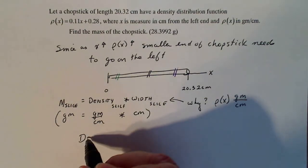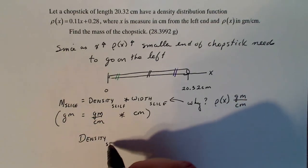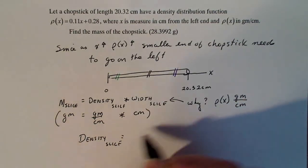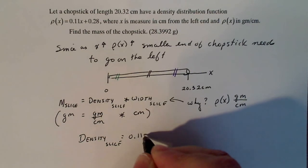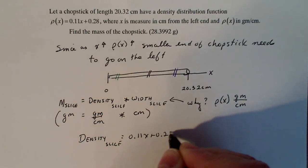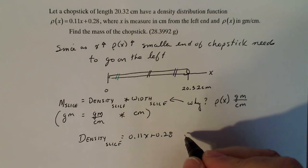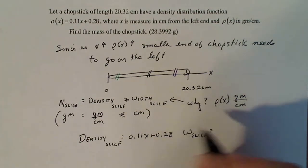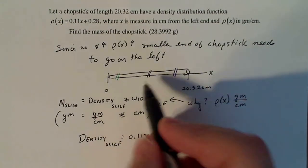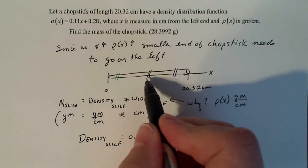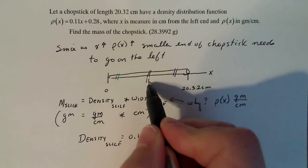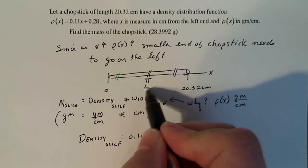So now I know what I have to multiply by. Let's talk about the density of my slice. My slice is given to me as 0.11x + 0.28. And the width of my slice? Well, let's see, if this is x and this is one end of the slice and this is the other end of the slice, you can call this length here Δx.